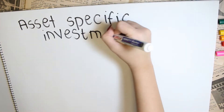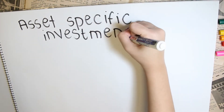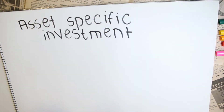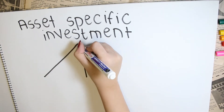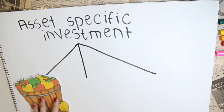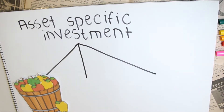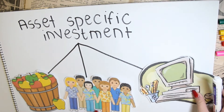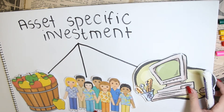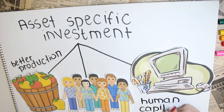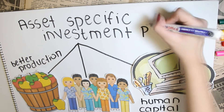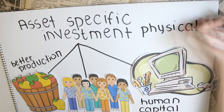Sometimes, a specific buyer-supplier transaction can outperform the market if they both make an additional investment. This type of investment depends on other market participants — called asset-specific investments. These can be investments in better production, human capital, or physical assets.